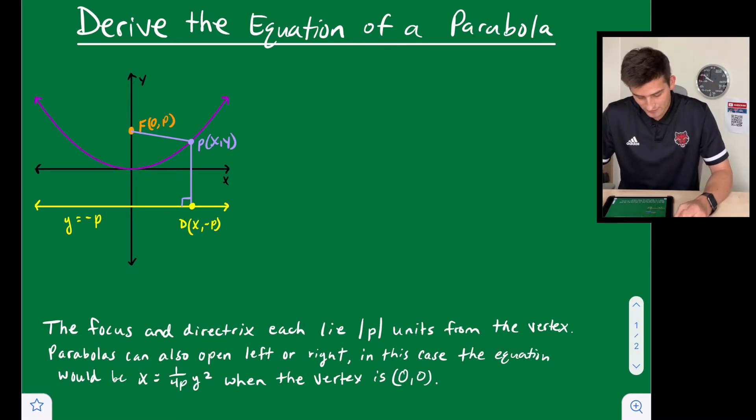So we have a diagram here where we have our x and y-axis in black, we have our parabola in purple, we have our directrix in yellow, we have our focus in orange, and we have a point on our parabola that's in a lighter purple color.